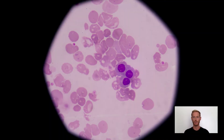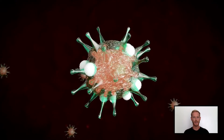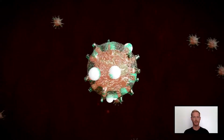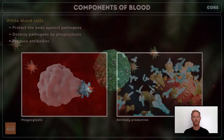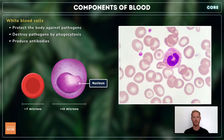Red blood cells are produced, alongside white blood cells and platelets, in the bone marrow. White blood cells help to protect the body against disease-causing pathogens like bacteria and viruses. Some white blood cells are involved with phagocytosis, whereby foreign substances are engulfed and destroyed, while others produce antibodies, which we'll return to in chapter 10. White blood cells have a large nucleus that can be clearly seen under the microscope, and are typically around twice the size of red blood cells.